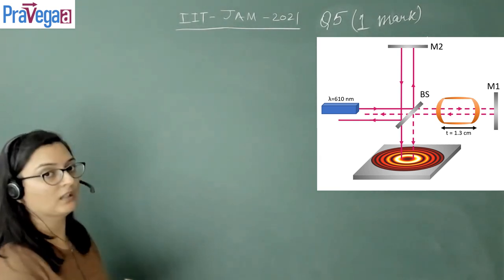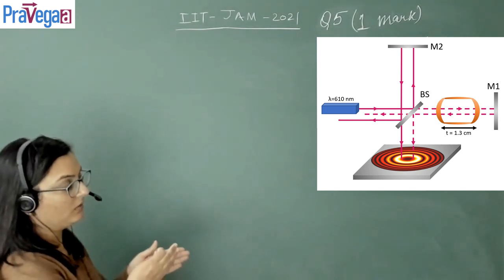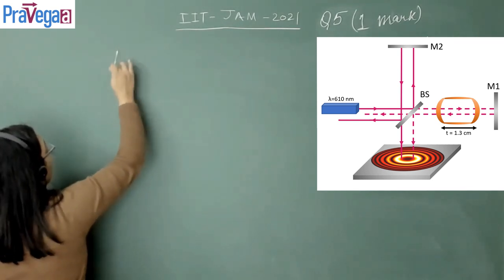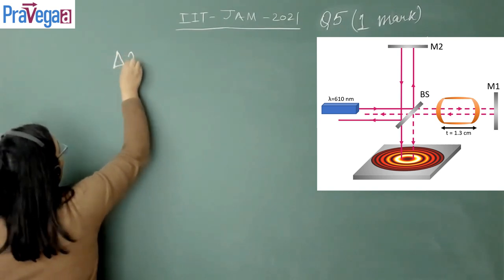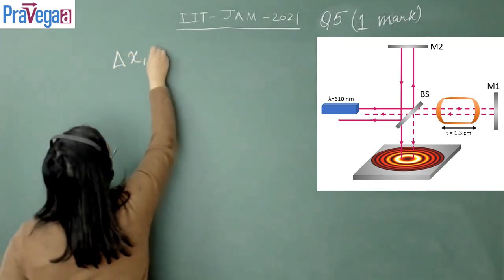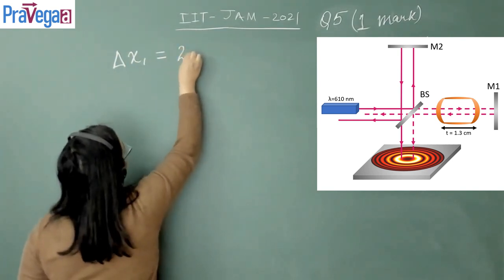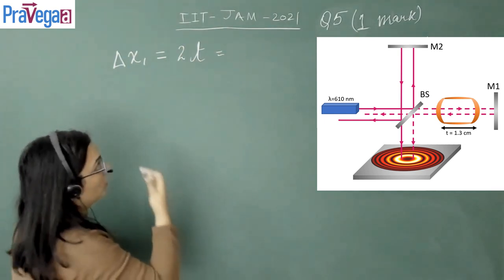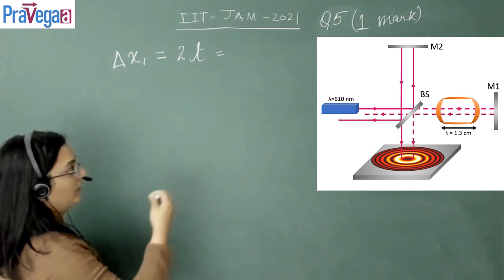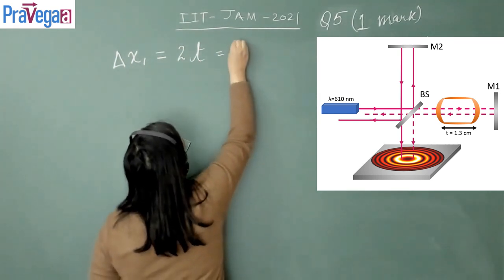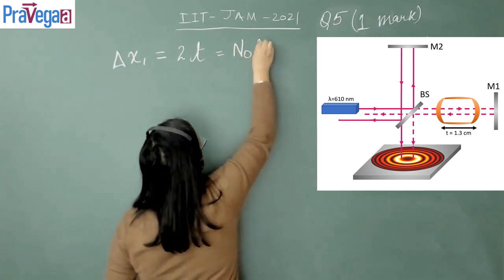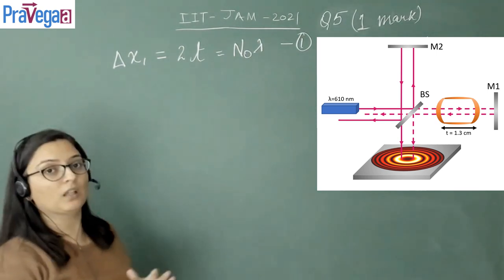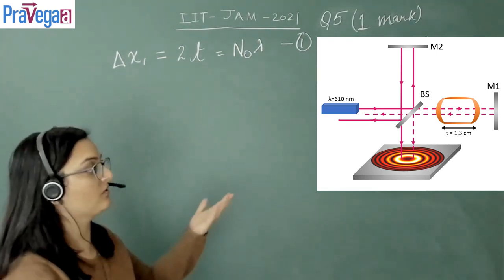In this condition, the interference condition or the path length traveled by this beam can be given by delta x1, which is equal to 2t. Since it is initially filled with air, we know that it is given by the integral multiple of the wavelength of light, which we denote as n0 lambda. This is equation number 1. n0 is the nth order of the fringe which is being produced. Since it is a reference line for us, we are taking it as n0.